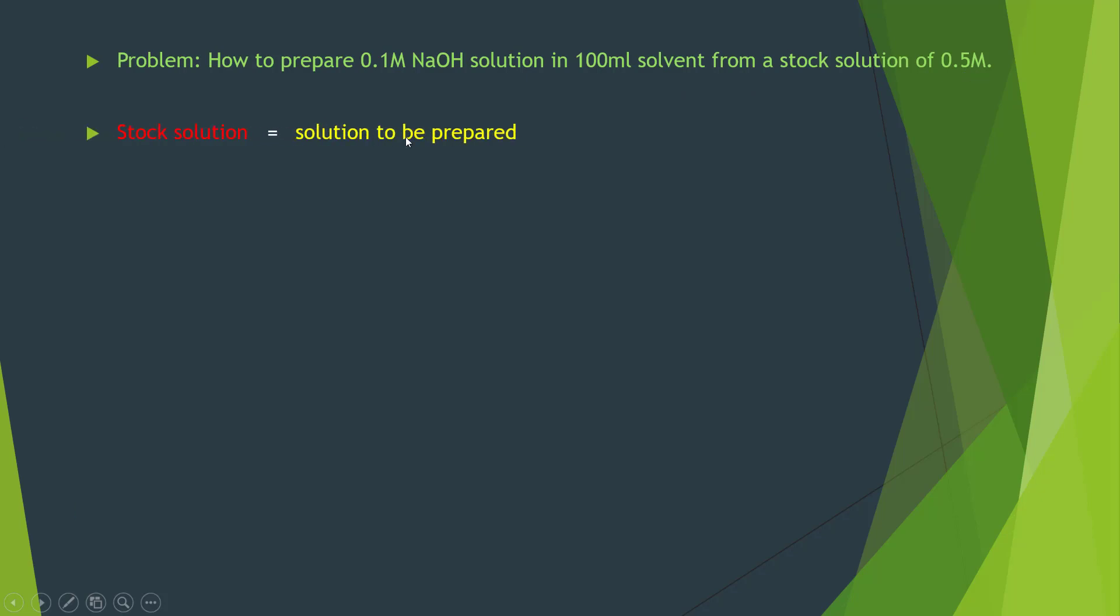We would write stock solution equals solution to be prepared. Actually, stock solution has a concentration of C1 and volume V1, while the solution to be prepared has a concentration C2 and volume V2.